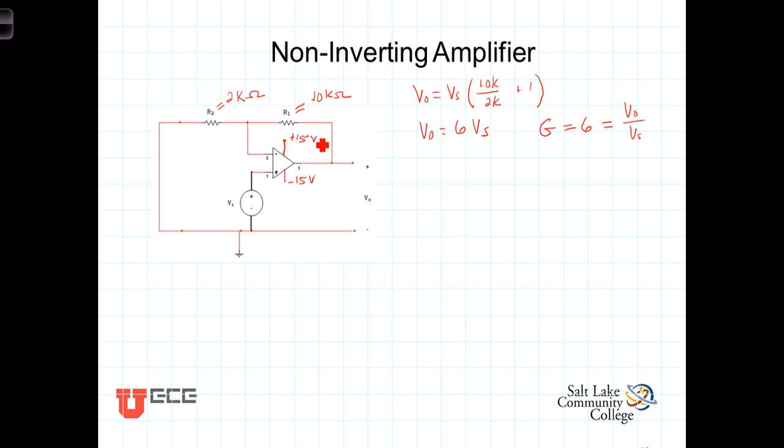Or, to put it in terms of inequalities, V out has got to be greater than negative 15 volts and less than a positive 15 volts. Now, substituting V out for 6 V sub S, we have 6 V sub S must be greater than a negative 15 volts and less than a positive 15 volts.